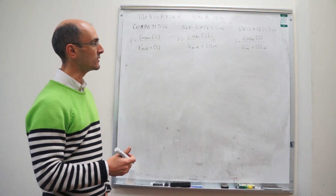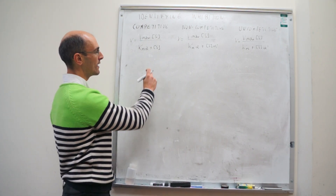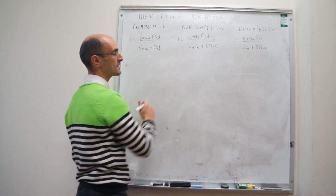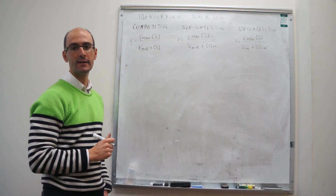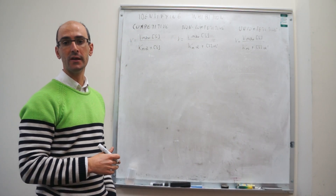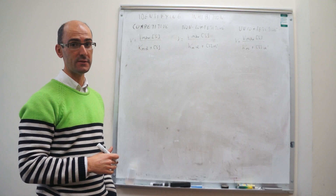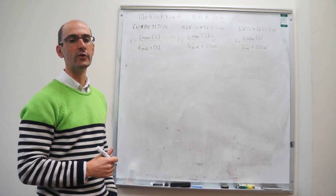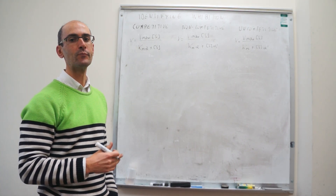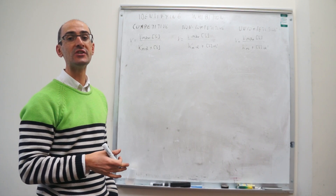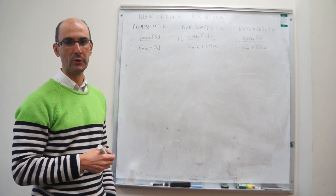It turns out that the best way to do this is to compare the Lineweaver-Burk representations of these rate laws for the uninhibited case and then the inhibited one. We'll derive Lineweaver-Burk graphs for each one of these three inhibitions, compare to the original uninhibited one, and determine the type of inhibition from the changes to the Lineweaver-Burk plot.